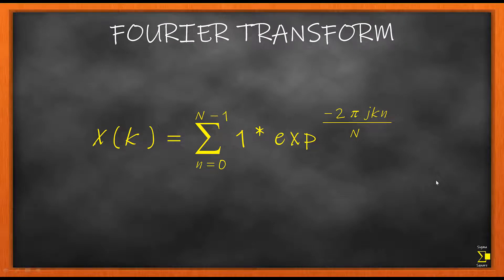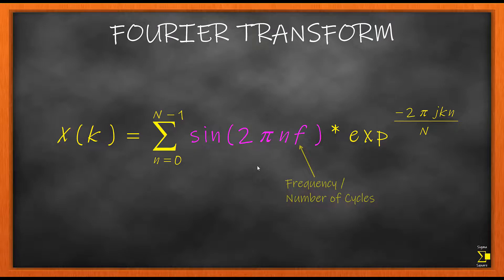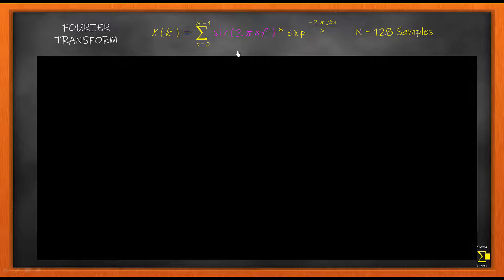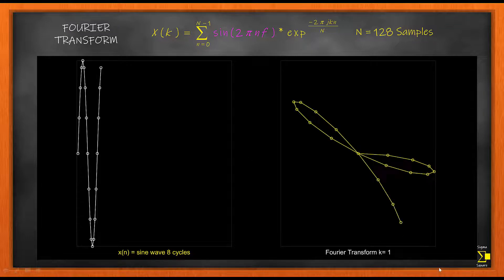Now let us understand the Fourier transform a little better by replacing the 1 with an actual input signal — a sine wave. A sine signal is very important because it is used in almost all aspects of engineering and mathematics. Let us see what a Fourier transform looks like when x(n) equals sine(2π·n·f), where n is the sampling index and f is the frequency or number of cycles. I'm going to have the input signal on the left hand side and the Fourier transform on the right hand side.